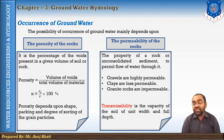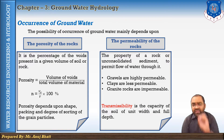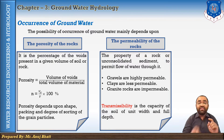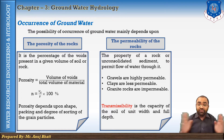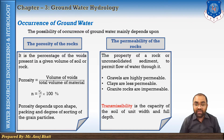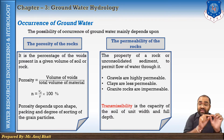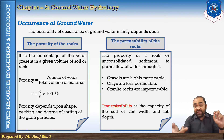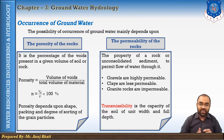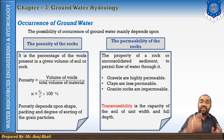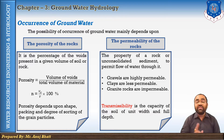Along with permeability, one more geological feature is transmissibility. It represents the same physical meaning as permeability, but the difference lies in the mathematics. The capacity of the entire soil of full width and full depth represents permeability. When this full width is converted to unit width, that gives transmissibility. So transmissibility is the capacity of the soil of unit width and full depth. These are the two major geological features which affect the occurrence of groundwater.